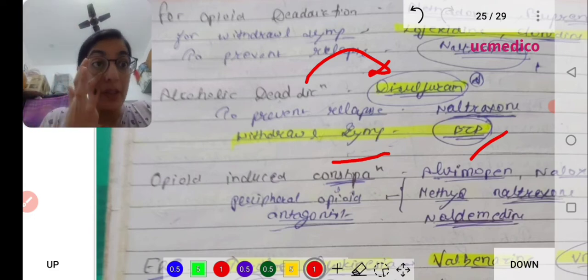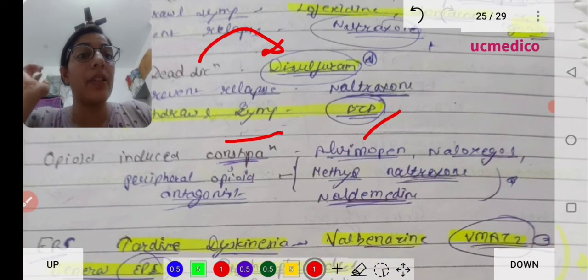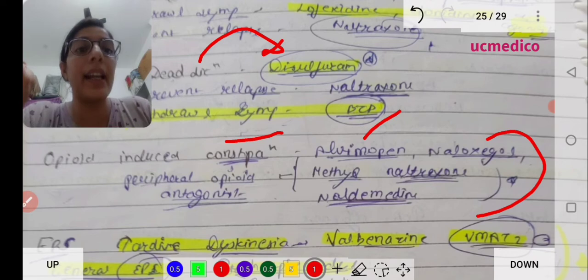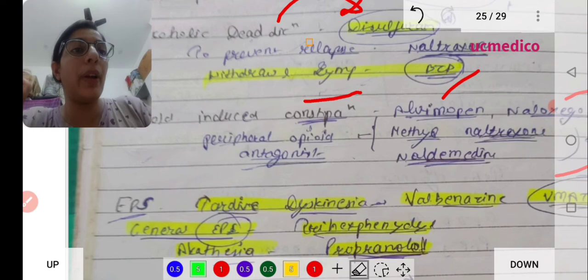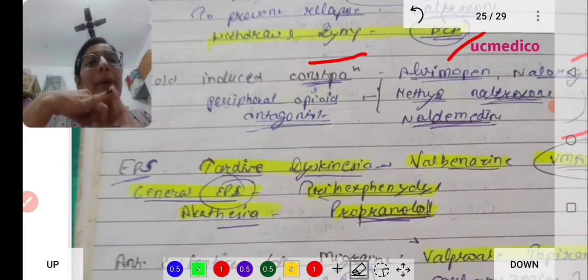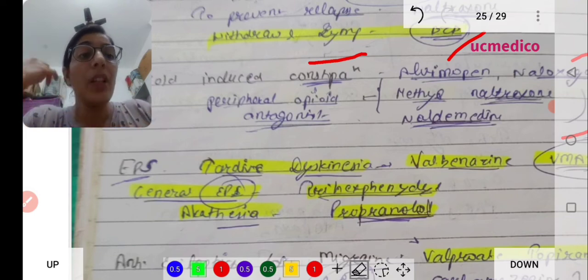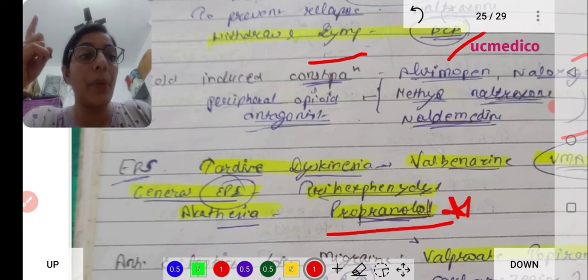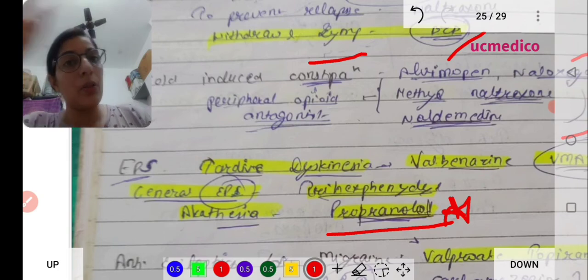Opioid-induced constipation - the drugs are alvimopan, naloxone, alvimopan, naloxegol, and methylnaltrexone. These are peripheral opioid antagonists. Go back to the video if you don't watch it.